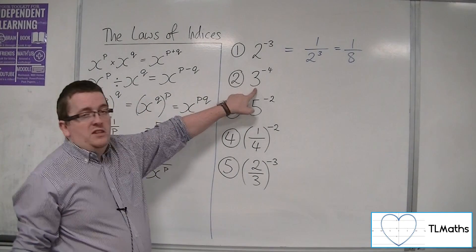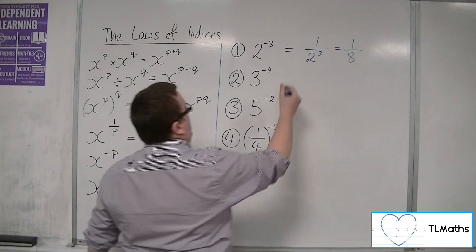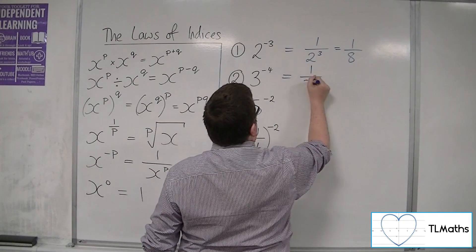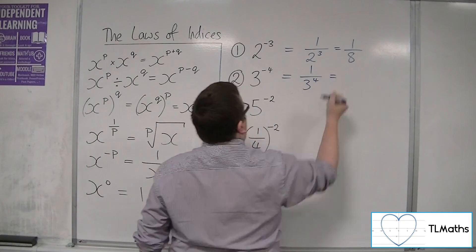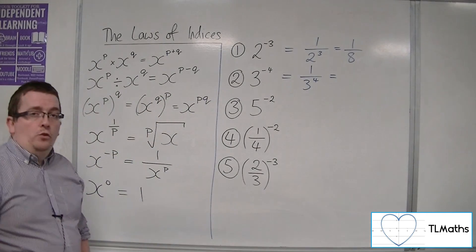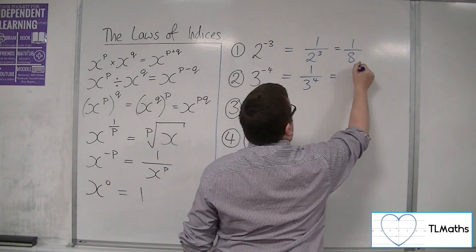If I've got 3 to the minus 4, then that's 1 over 3 to the 4. And 3 to the 4 is 81, so that's 1 over 81.